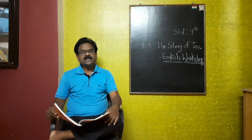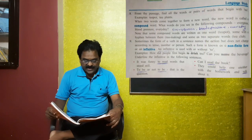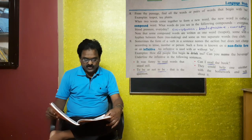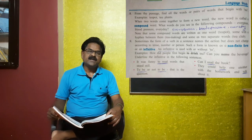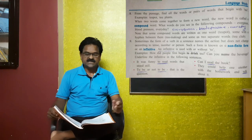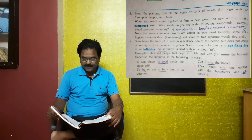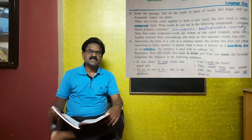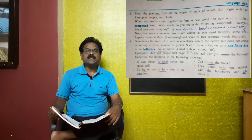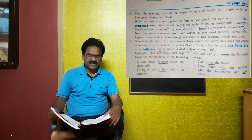Now we are going to learn the language study. From the passage, find all the words or pairs of words that begin with 'tea'. Examples: teapot, tea plants. When two words come together to form a new word, the new word is called a compound word. Examples from the passage: tea plants, evergreen, blood pressure, everyday.